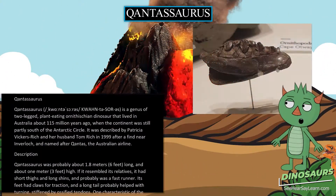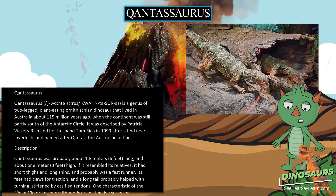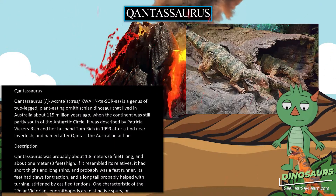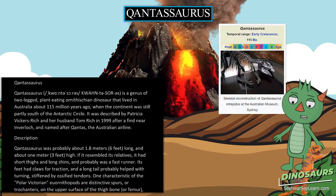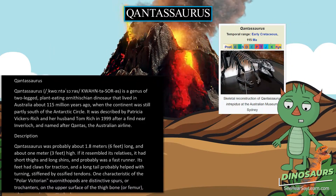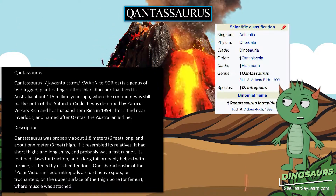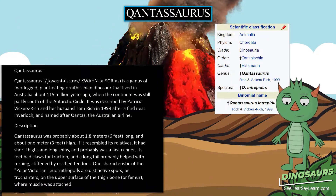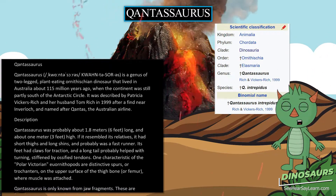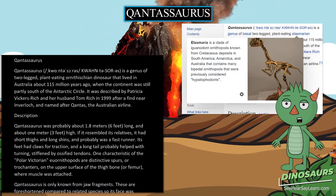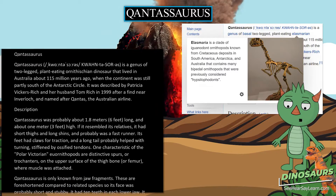Qantasaurus is a genus of two-legged, plant-eating ornithischian dinosaur that lived in Australia about 115 million years ago, when the continent was still partly south of the Antarctic Circle. It was described by Patricia Vickers Rich and her husband Tom Rich in 1999 after a find near Inverloch, and named after Qantas, the Australian airline.